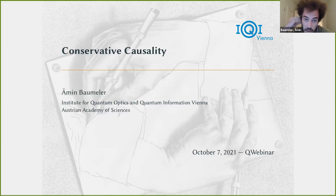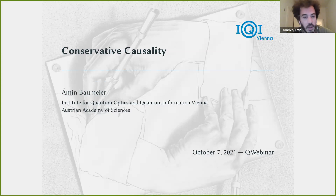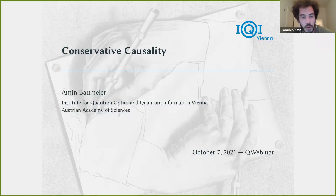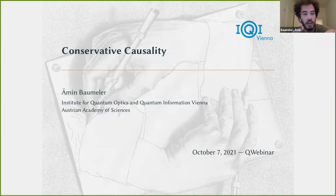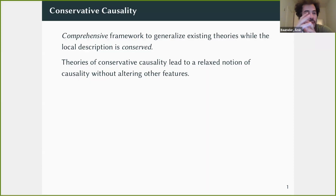The title is 'conservative causality,' a term you might never have heard. I will jump right in and explain what I mean by conservative causality, and later I'll clarify concepts like causal order, and give examples of theories of conservative causality and discuss their properties.